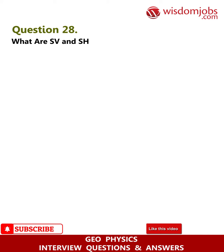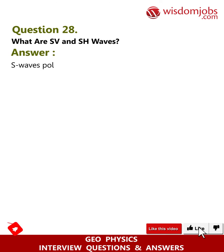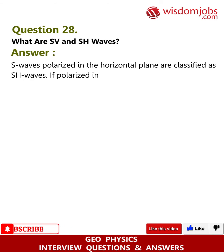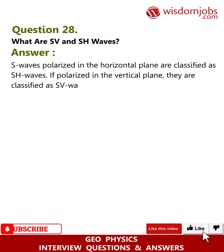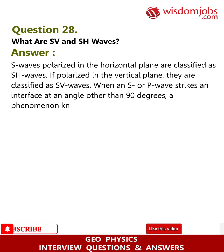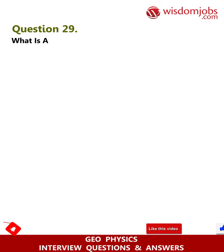Question 28: What are SV and SH waves? Answer: S waves polarized in the horizontal plane are classified as SH waves; if polarized in the vertical plane, they are classified as SV waves. When an S or P wave strikes an interface at an angle other than 90 degrees, a phenomenon known as mode conversion occurs.